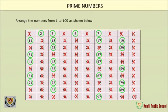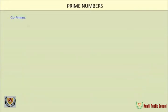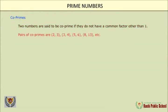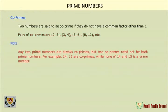This method is known as the Sieve of Eratosthenes. From the list we observe that every prime number is odd except 2, but every odd number need not be prime. Co-primes: two numbers are said to be co-prime if they do not have a common factor other than 1. Pairs of co-primes include: 2 and 3, 3 and 4, 5 and 6, 8 and 13, etc. Note: any two prime numbers are always co-primes.